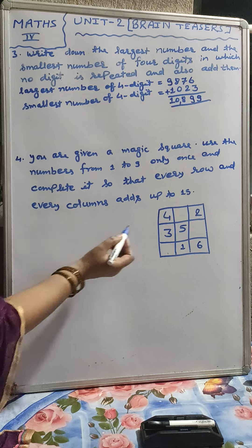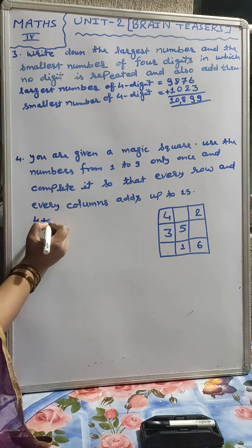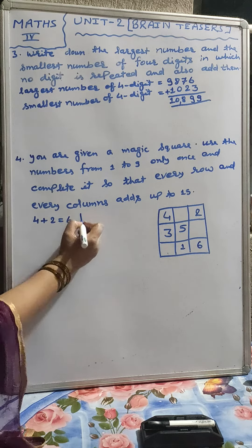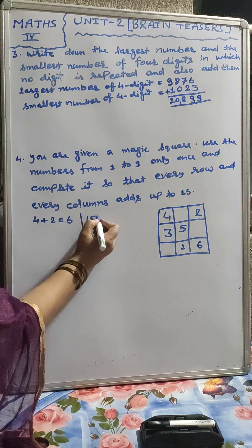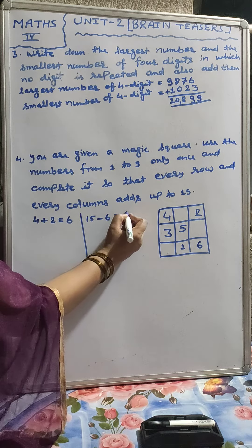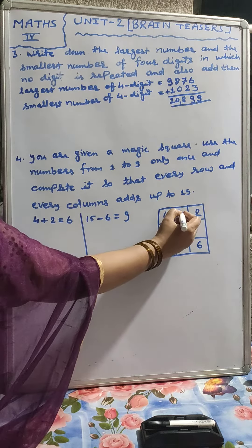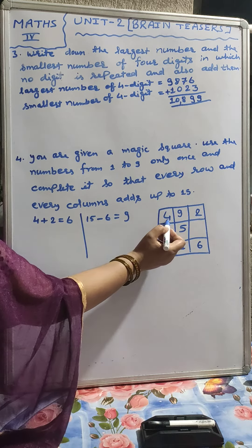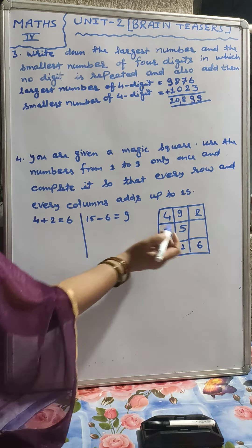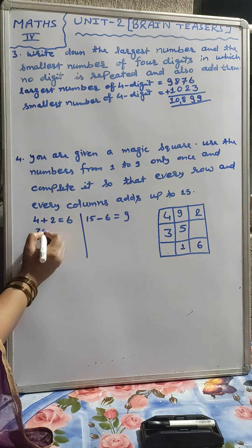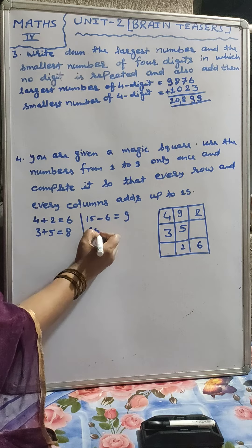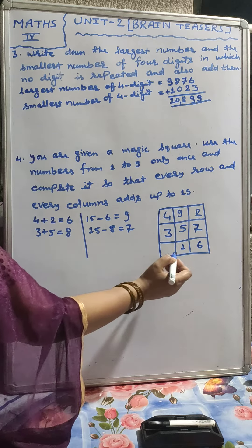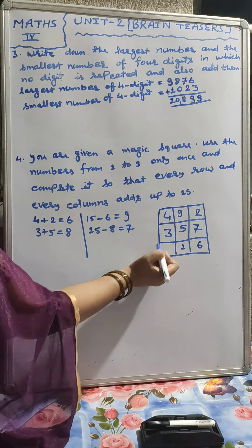At first we will look at 4 plus 2, that will be 6, and the total should be 15. So we minus 15 minus 6, that will be 9. We write 9 here. Checking: 9 plus 2 is 11, plus 4 is 15. Next, 5 plus 3 is 8, and 15 minus 8 is 7. We write 7 here. Checking: 7 plus 5 is 12, plus 3 is 15.